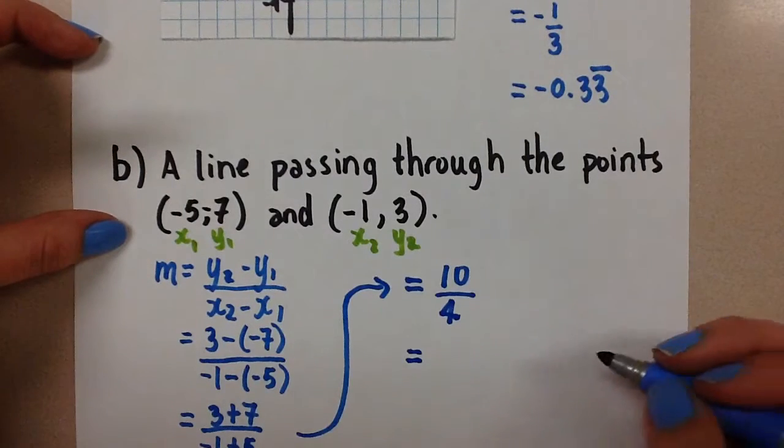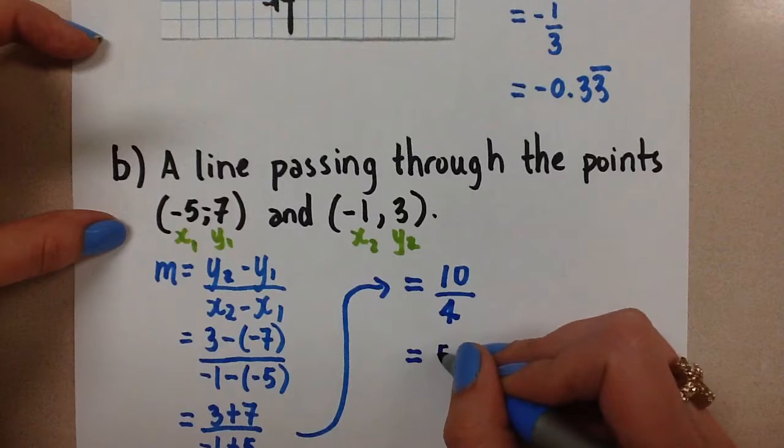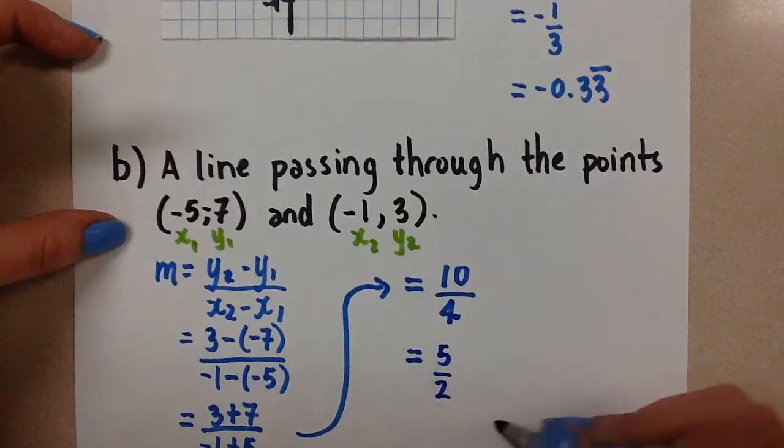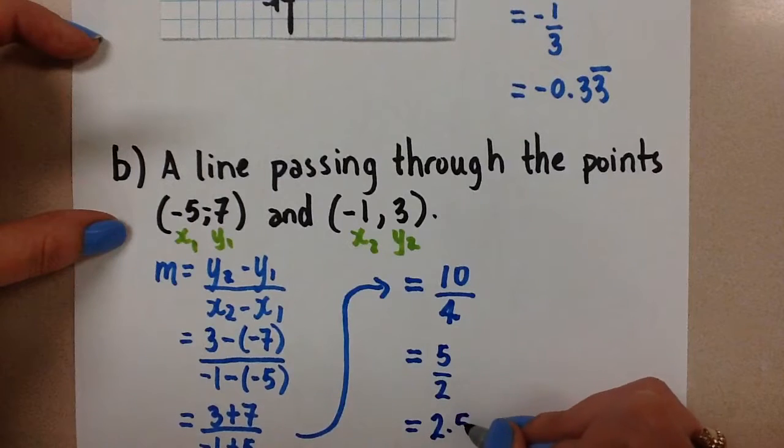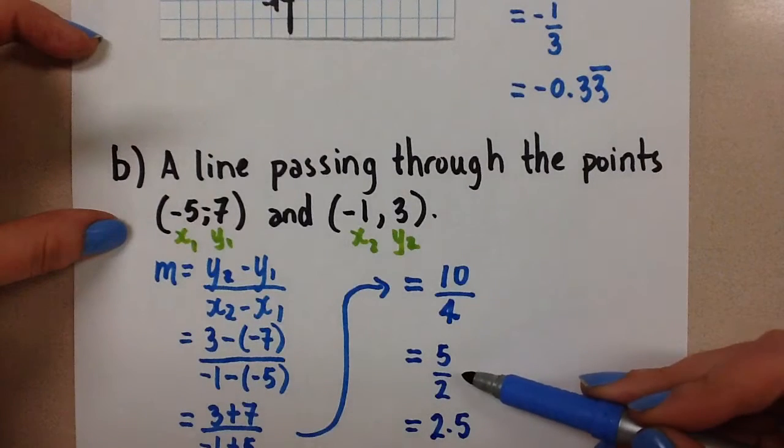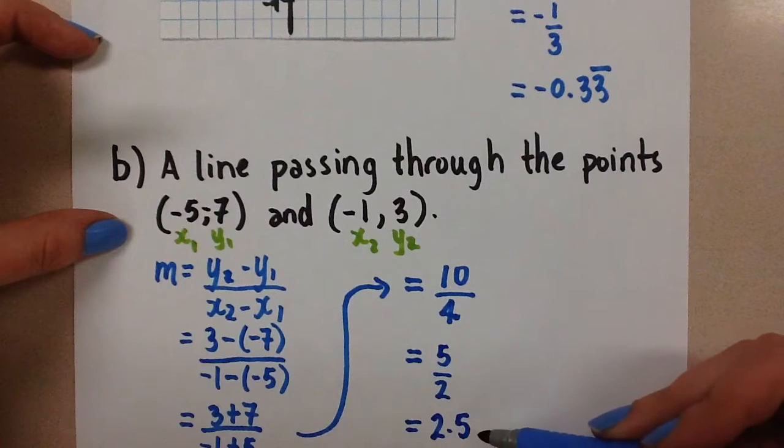I want to reduce this fraction, of course. The slope would then be 5 over 2, or if you prefer decimal values, that would be 2.5. We always want to do the reduced fraction, because it is more useful than that decimal.